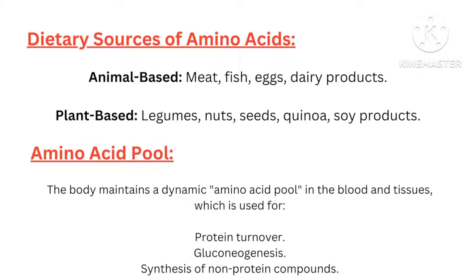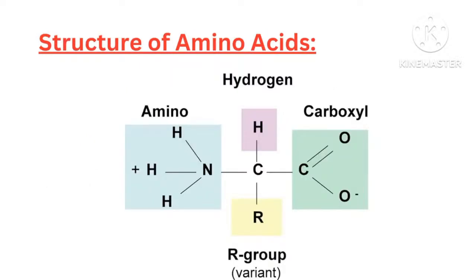General structure of amino acids. The basic structure of an amino acid can be summarized as H2N-CHR-COOH, where the alpha carbon is the central carbon atom to which all functional groups are attached. The amino group (NH2) is the basic functional group. The carboxyl group (COOH) is the acidic functional group. There is a hydrogen atom attached to the alpha carbon, and a side chain (R group) unique to each amino acid that determines its chemical properties.